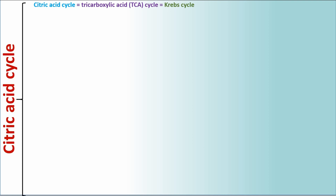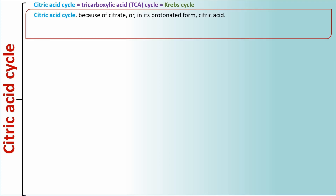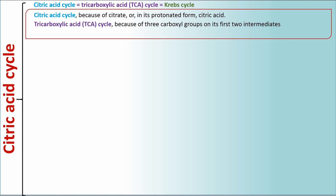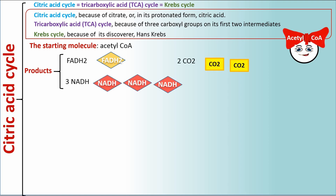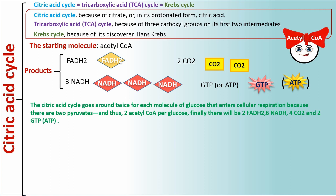Citric Acid Cycle — also called the Tricarboxylic Acid (TCA) cycle or Krebs cycle. It is called the Citric Acid Cycle because of citrate (or in its protonated form, citric acid); the TCA cycle because of three carboxyl groups on its first two intermediates; and the Krebs cycle because of its discoverer Hans Krebs. The starting molecule is acetyl-CoA, and the products are FADH2, 3 NADH, 2 CO2, and GTP or ATP. The citric acid cycle goes around twice per molecule of glucose because there are two pyruvates and thus two acetyl-CoA per glucose.